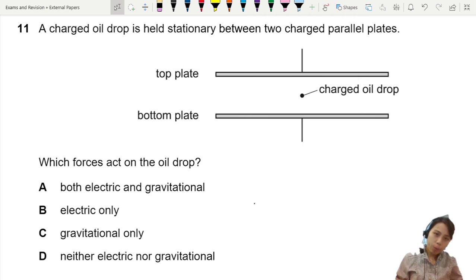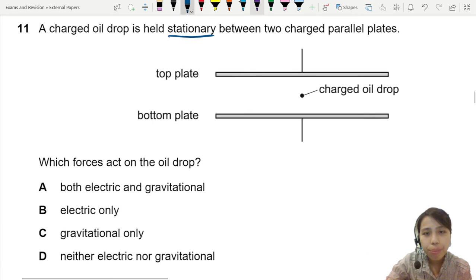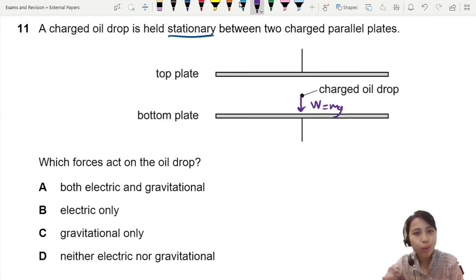If you have an oil drop and it's held stationary, that means you're going to have a weight component which is mg. But it's not falling down, it's not accelerating downward, so there's